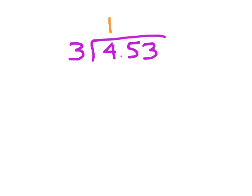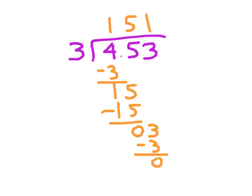4 divided by 3 is 1, because 1 times 3 is 3. 4 minus 3 is 1, we bring down the 5. 15 divided by 3 is 5, because 5 times 3 is 15, and 15 minus 15 is 0. Bring down the 3. 3 divided by 3 is 1, because 1 times 3 is 3, and 3 minus 3 is 0.